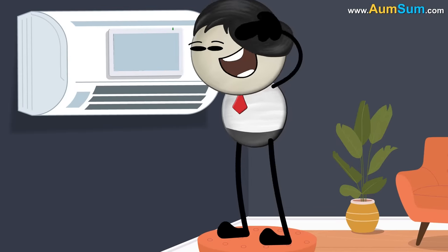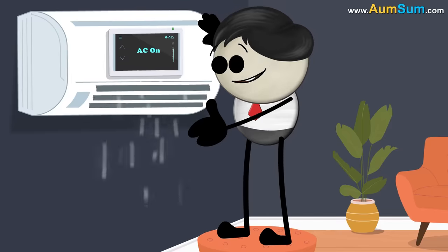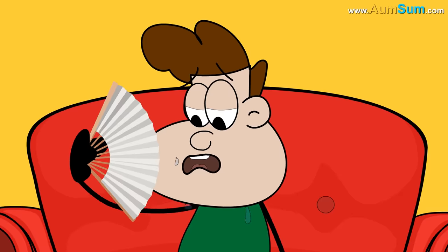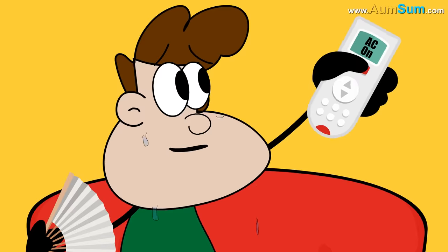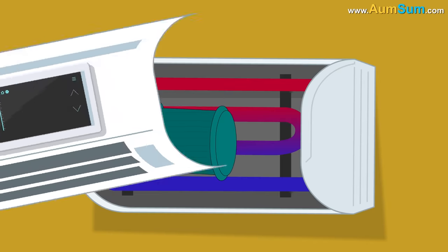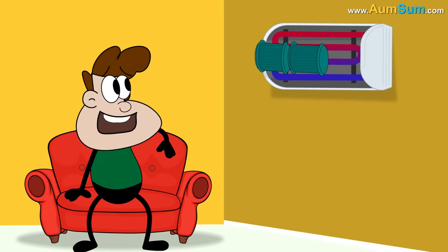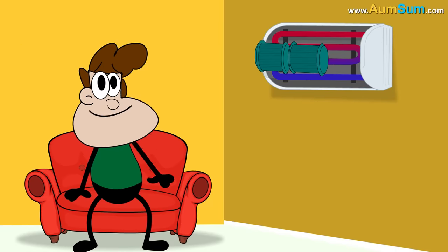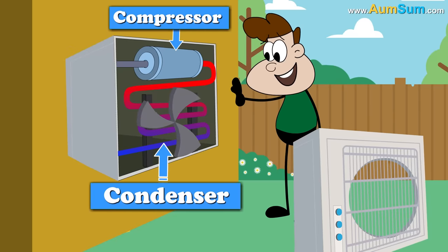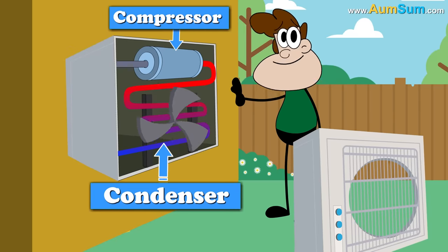How does an air conditioner work? Simple. I blink and it starts working. Oh, AumSum. An air conditioner has three main parts. Firstly, evaporator which is located inside the house. Finally, compressor and a condenser which are usually located outside.